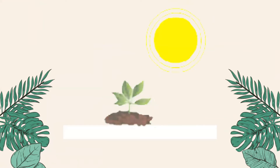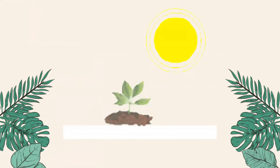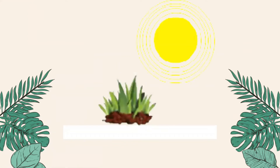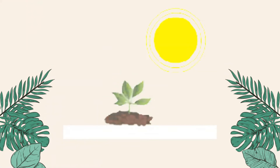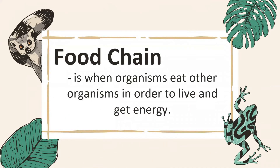Sunlight is a source of light energy and heat energy. Plants use light energy to make food during photosynthesis. This food is then used as energy by other living things. So energy moves from one living thing to another as a chain — we call this a food chain.